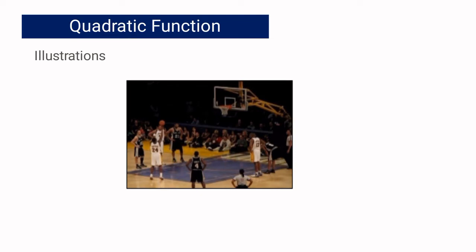This is our first illustration. We have a basketball player attempting a free throw. Once the player releases the ball, the ball will travel in that curved direction.